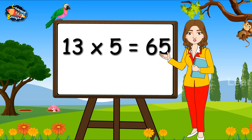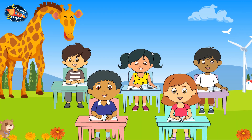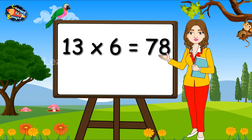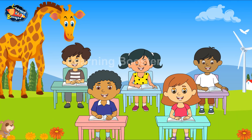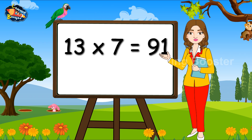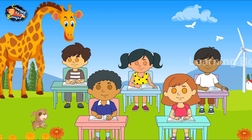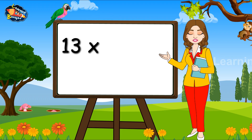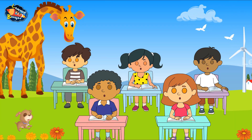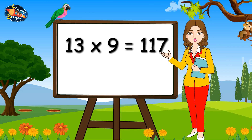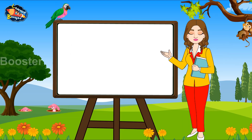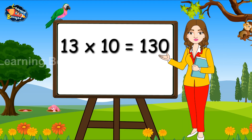13, 5's are 65. 13, 6's are 78. 13, 7's are 91. 13, 8's are 104. 13, 9's are 117. 13 tens are 130.